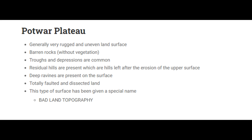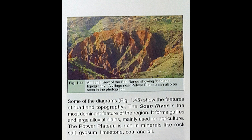These are the features of Potohar plateau. Number 2: Drainage. The drainage includes river Swan, Ochli, Khabiki and Kalar Kahar. The Swan River is the most dominant feature of the region. It forms gullies and large alluvial plains, mainly used for agriculture.